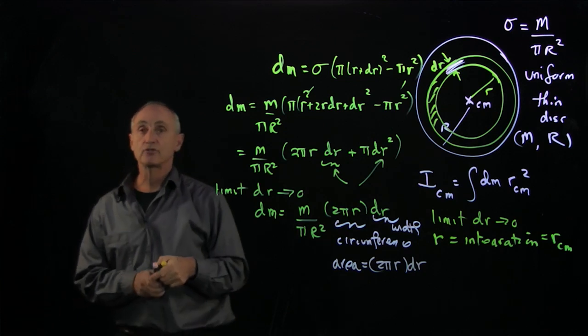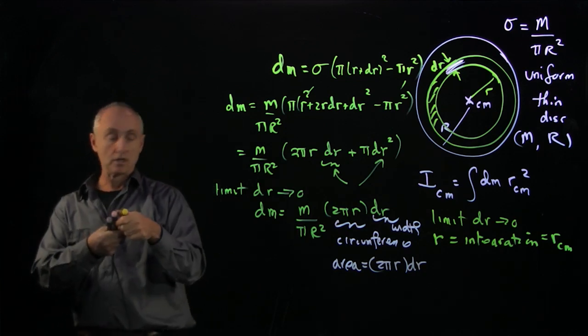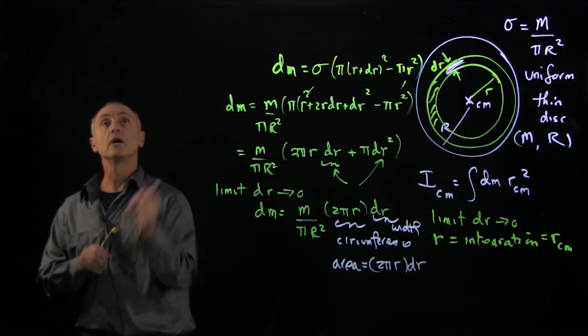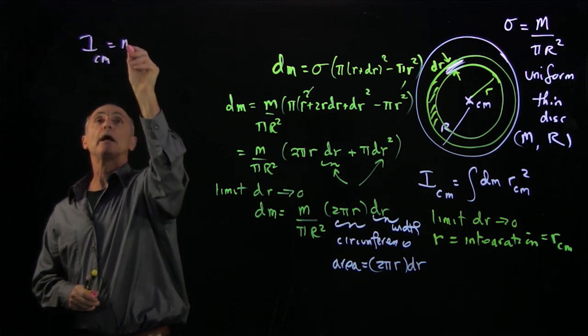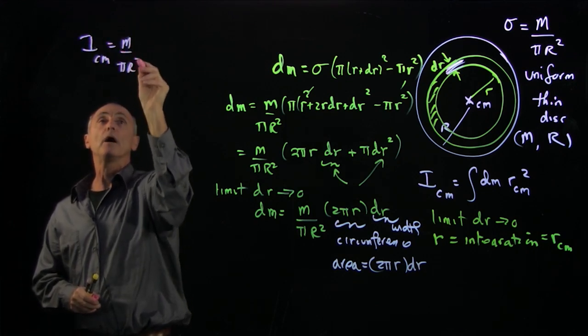And now that enables us to write the moment of inertia about the center of mass, Icm. Let's pull out these constants, m over πr².